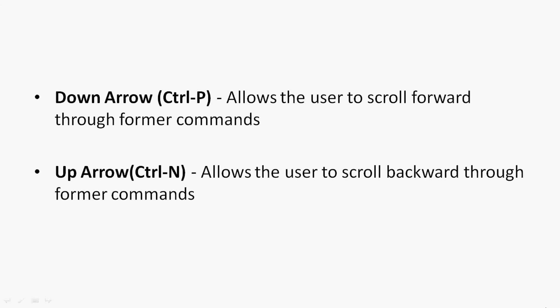Now we will see the up arrow or Ctrl P, and the down arrow or Ctrl N. The up arrow or Ctrl P allows the user to scroll backward through former commands. The down arrow or Ctrl N allows the user to scroll forward through former commands.